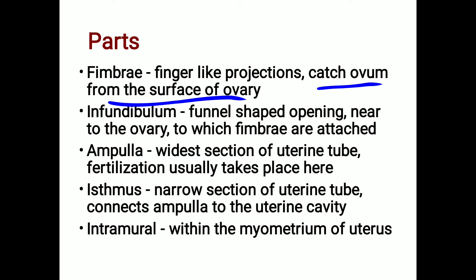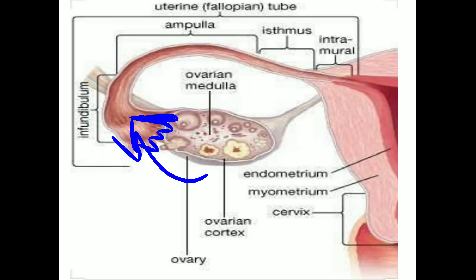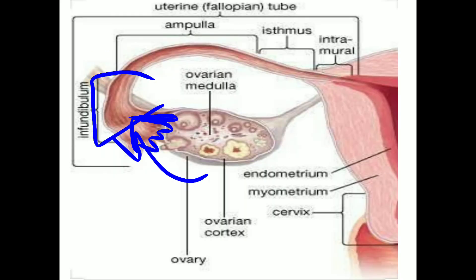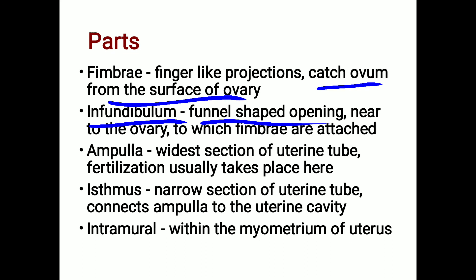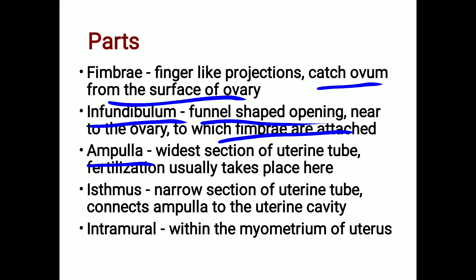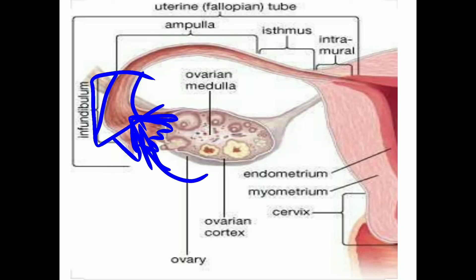The second part is the infundibulum, which is the funnel-shaped opening near the ovary. The fimbriae are attached to the infundibulum. It is a dilated part present close to the ovary. The third part is the ampulla.